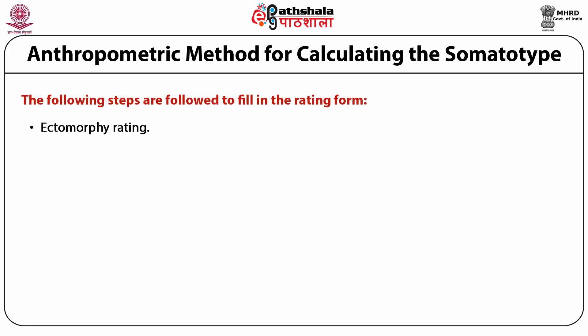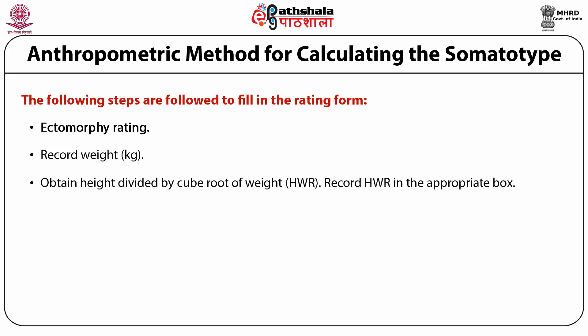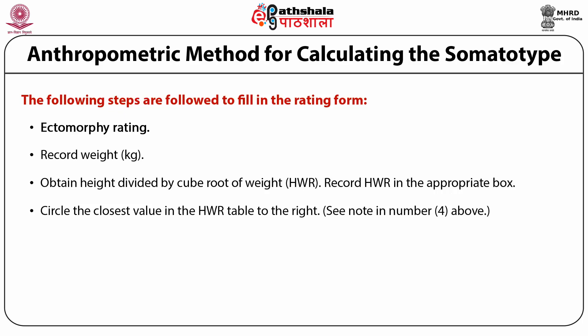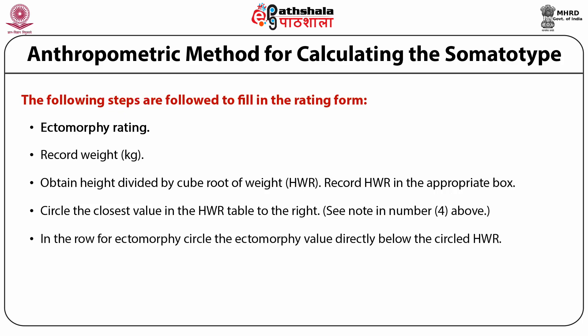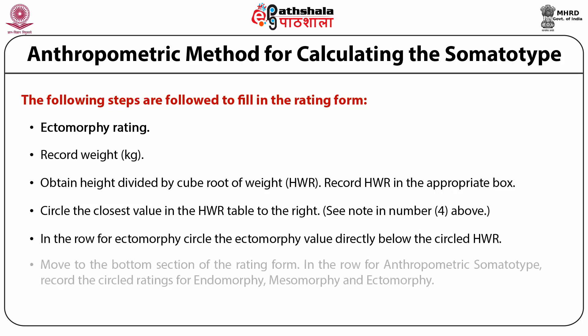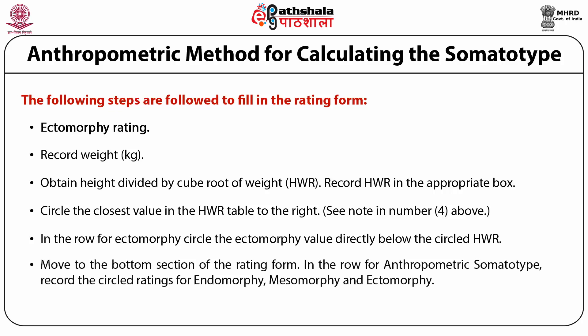For ectomorphic rating, record the weight and obtain the height divided by cube root of weight (HWR). Record HWR in the appropriate box and circle the closest value in the HWR table. In the row for ectomorphic, circle the ectomorphic value directly below the circled HWR. Then move to the bottom section of the rating form and record the circled ratings for endomorphic, mesomorphic and ectomorphic, and sign your name to the right of the recorded rating.